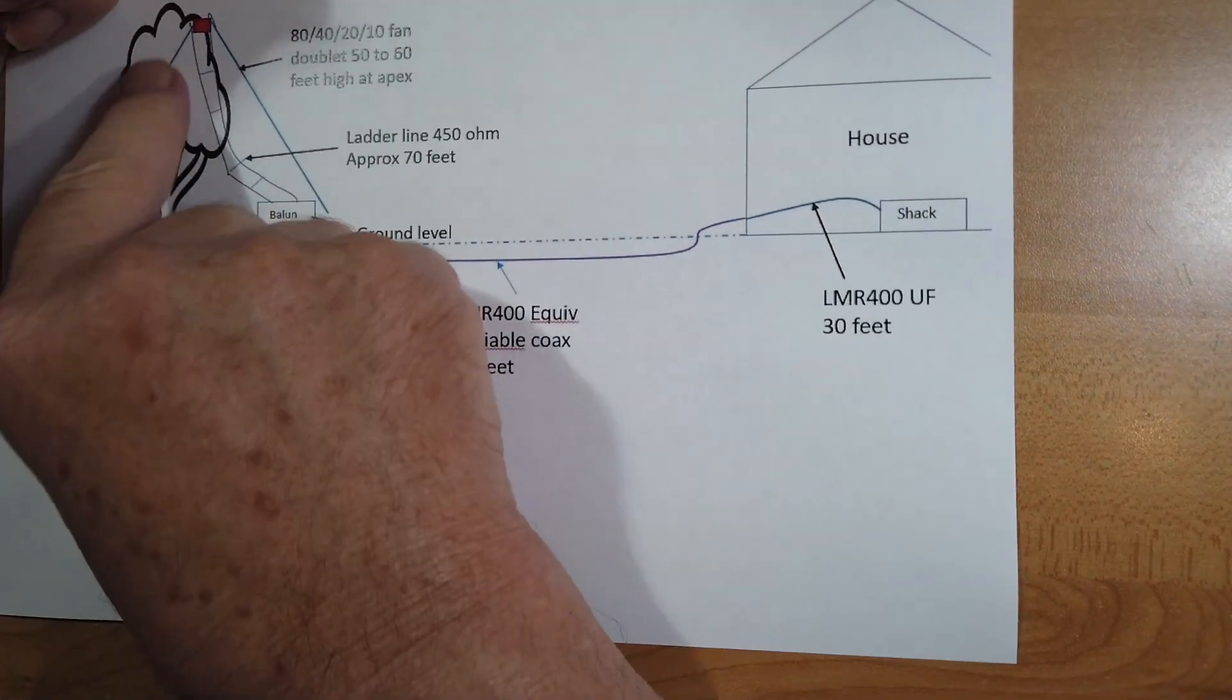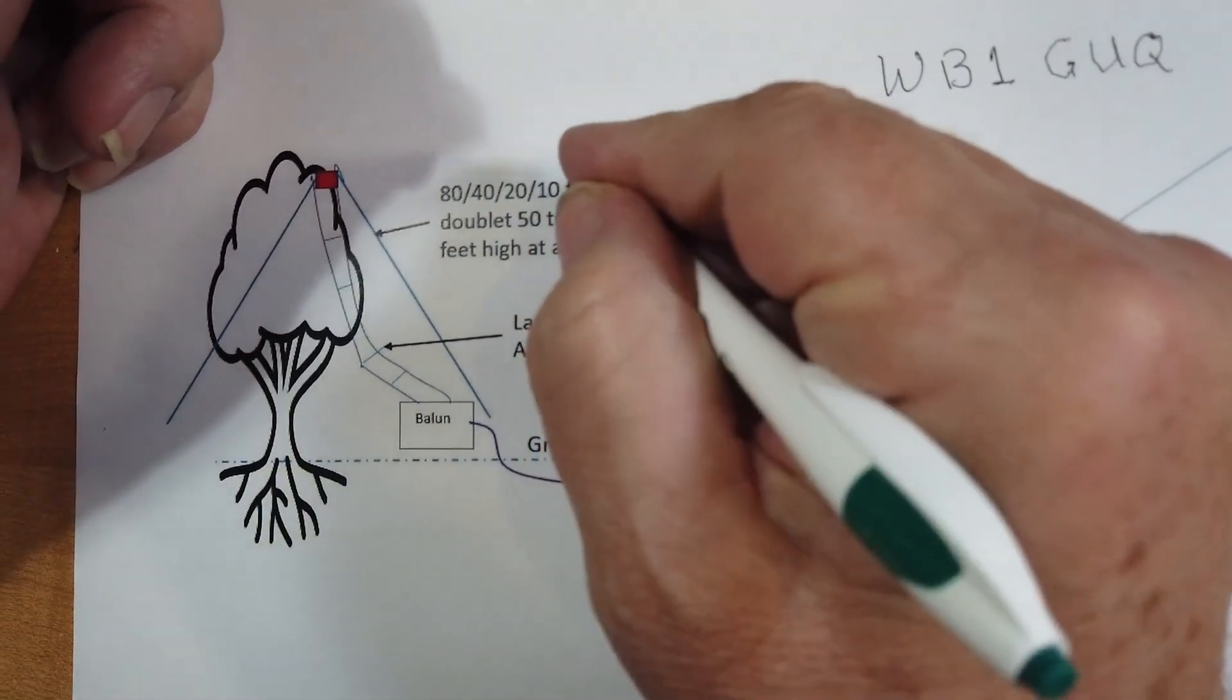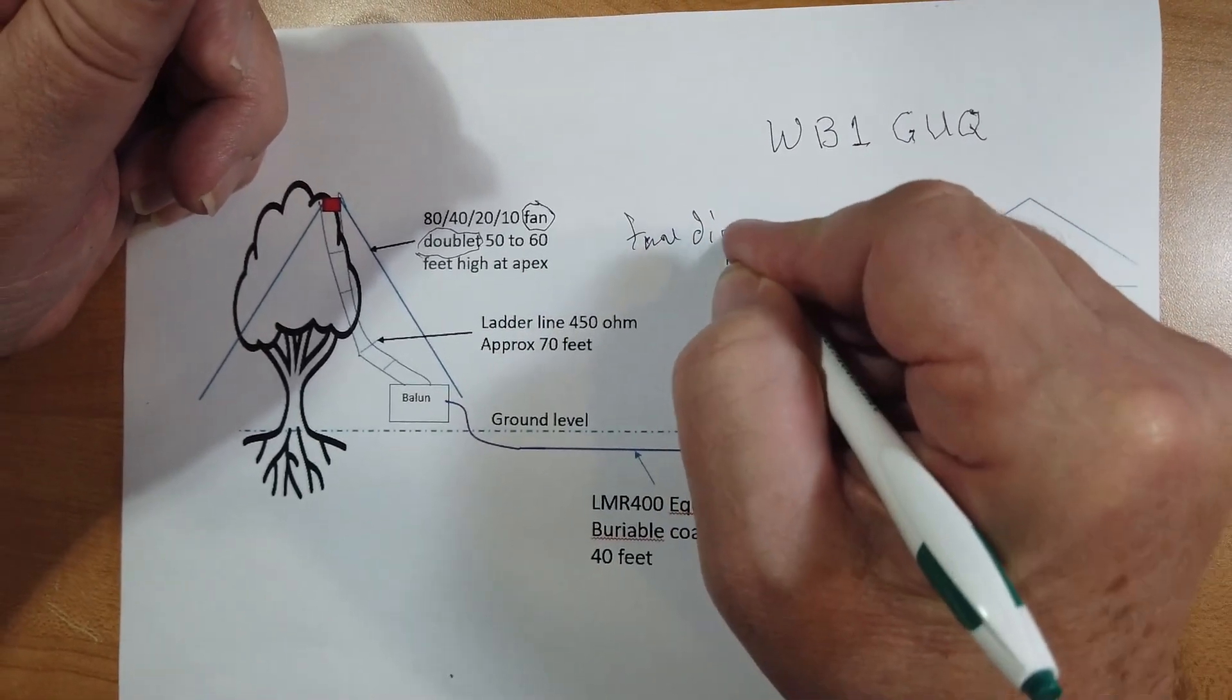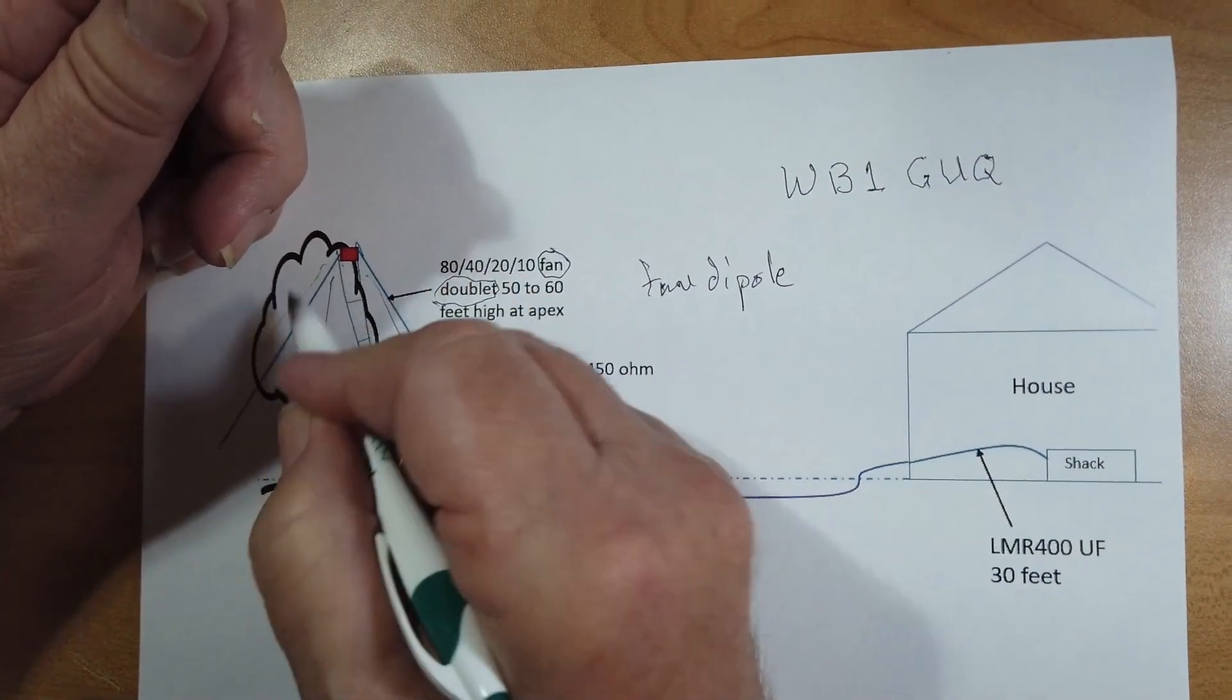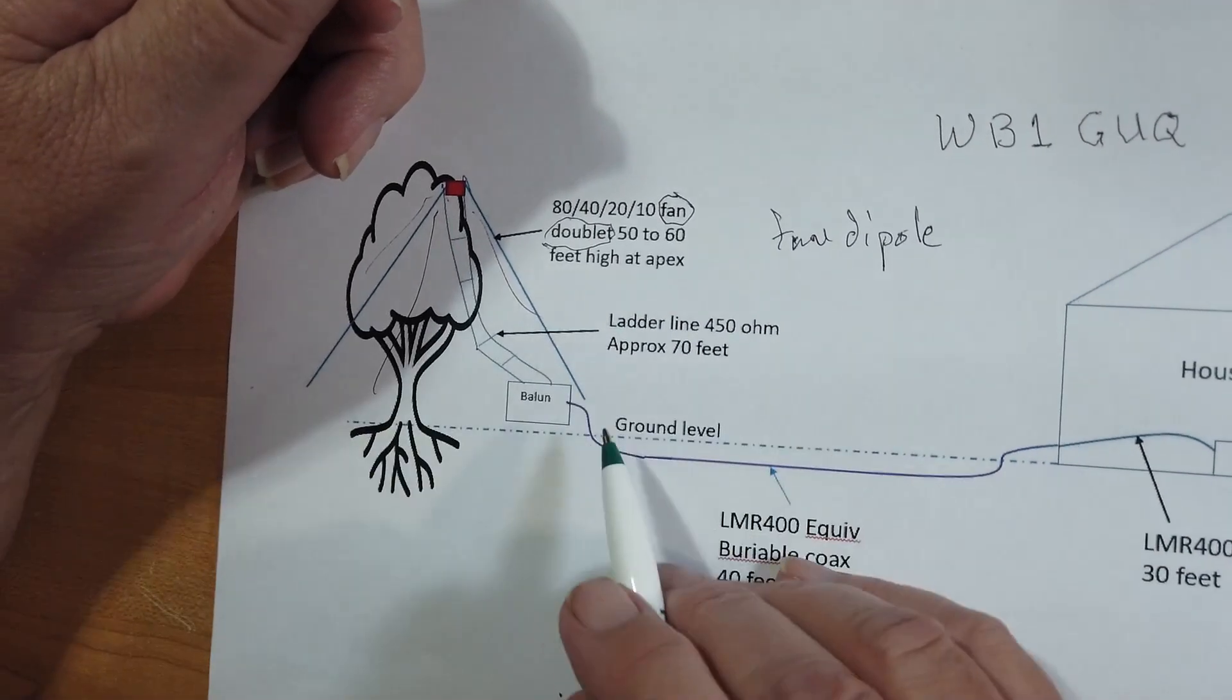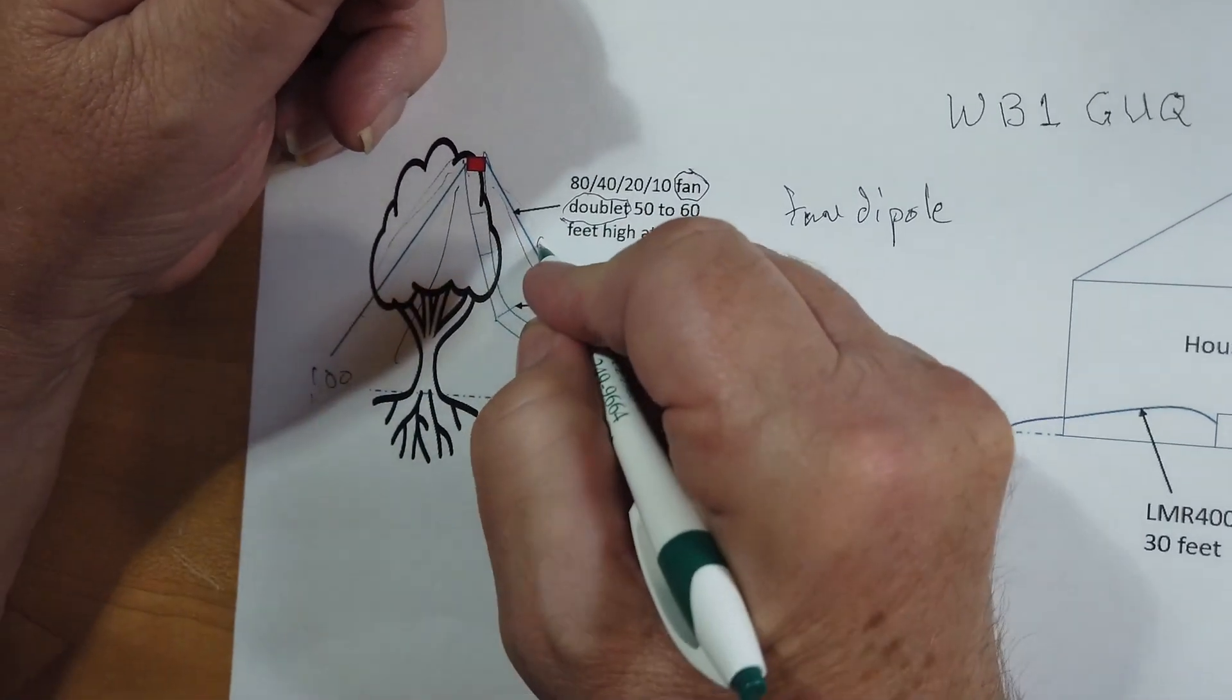And then there are some trees out back. And he is thinking of, and this is a bit of a contradiction, he has a fan doublet. I think what he means is fan dipole, where he'll have the different bands out here, and he can do that for 80-40-20-10. He could do a doublet. A doublet is not a fan. A doublet's just a length of wire on each side, usually about 100 feet total, so they're 50 feet on the side.